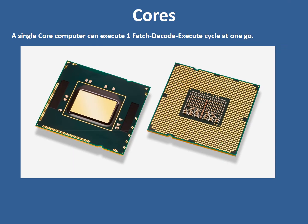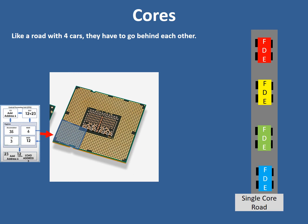The final C is cores — remember we have clock speed, cache and cores. A single core computer can execute one fetch, decode, execute cycle at a time. Because of the clock speed, millions of these happen one after the other. We can think of this like a road: if there are four cars each representing a process with a fetch, decode and execute, we have to run each one after the other with no overtaking, as you can see in the diagram.